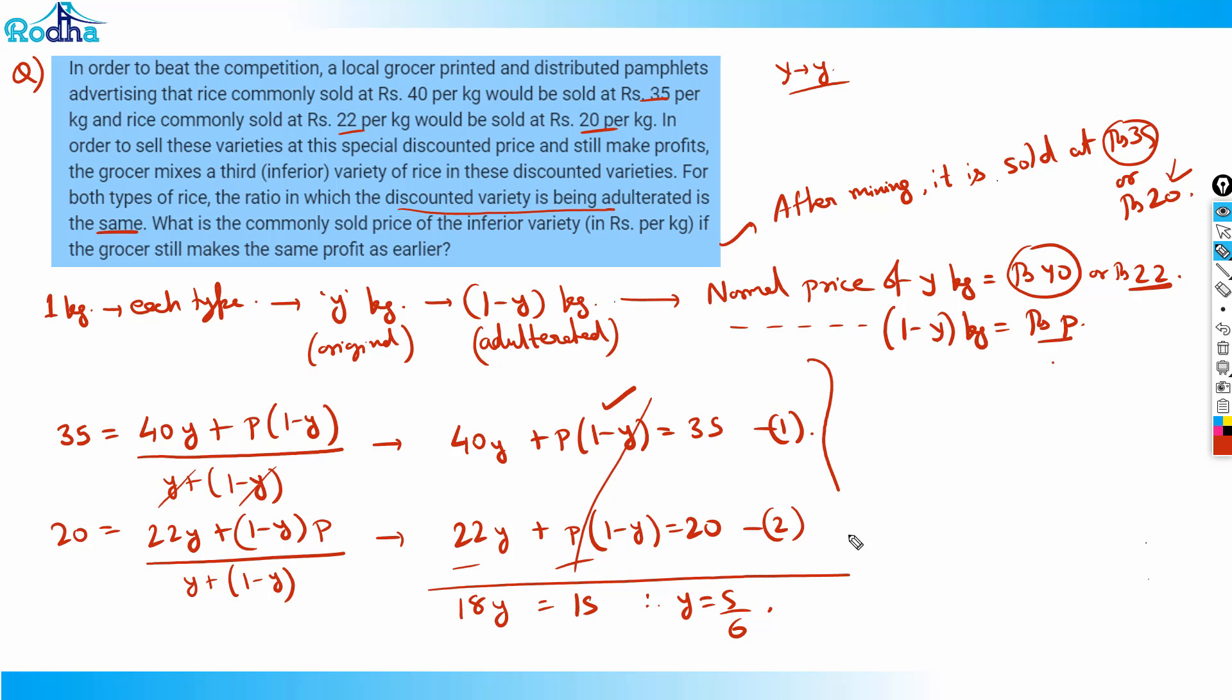My equation 1 will become 40 times 5/6 plus p times (1 minus 5/6) equals 35. If you solve here, you get the value of p as 10. So p is that adulterated price, that inferior quality price I assumed to be p, and that is my answer.